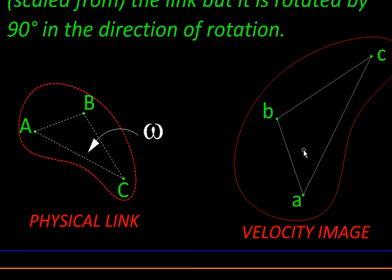Now this result helps us to get the velocity image of any point in a rigid body, provided we know velocity images of two points in that rigid body, because after that all we need to do is construct a similar triangle.